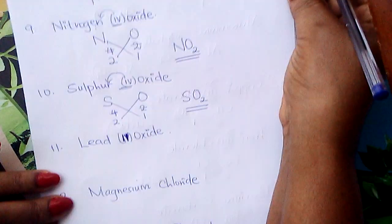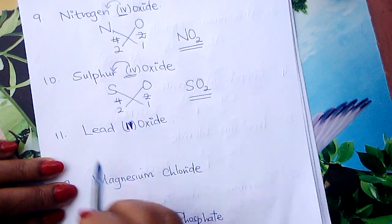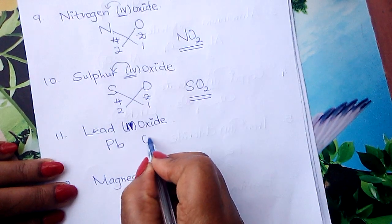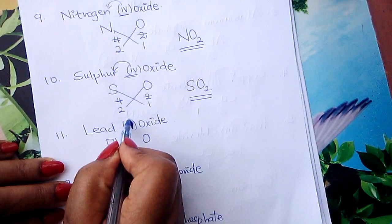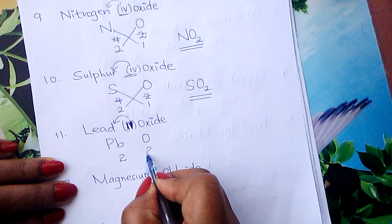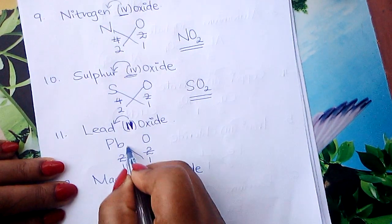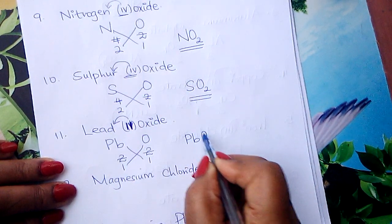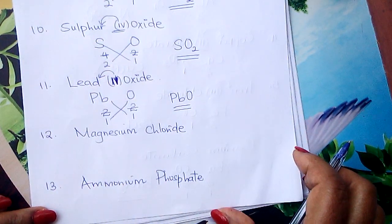We are almost done. Lead(II) oxide — symbol for lead is Pb, oxygen is O. Valency for lead is 2, oxygen is also 2. Simplify by 2: 1 and 1. Interchange — each one takes 1. No need to write them. This is the formula for lead(II) oxide: PbO.